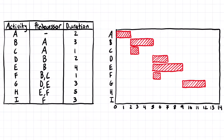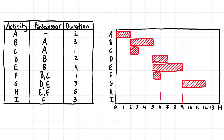Moving on to activity H, H depends on E and F, and it's five days long. So we're going to have to find out where E and F finish. E finishes here at the end of the ninth day, and F finishes here at the end of the sixth day. We can't start H until both of those are complete, and it's five days long, so we're going to start here and go across five days.